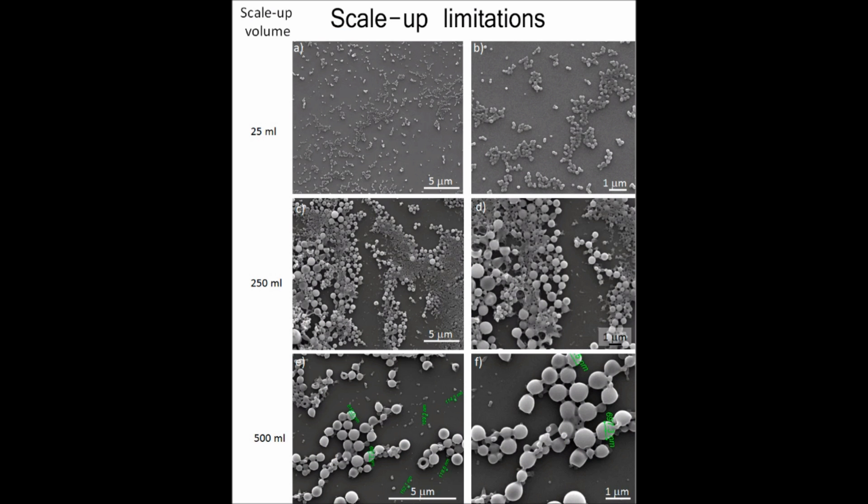Highly energetic homogenization techniques such as probe sonication render monodispersed PLGA nanoparticles. But when we attempted to scale up the production to different reaction volumes, heterogeneous particle distributions were obtained. These results clearly show that the emulsification process works well for small batches, but scale up is difficult.